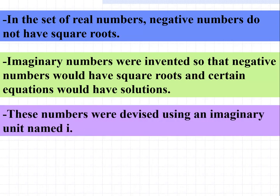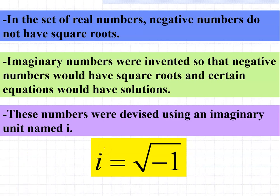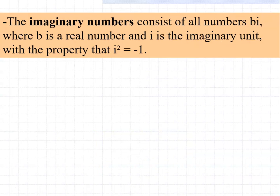These numbers were devised using an imaginary unit named i. We say that i is equal to the square root of negative 1. So therefore, for every negative number we have, we can now solve it using the square root of negative 1 equal to i.